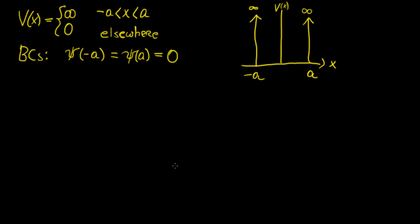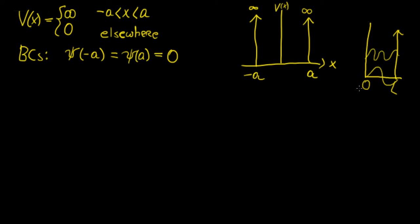In this problem we're going to solve a symmetric infinite square well. We already talked about the infinite square well for the case where we have a well going from zero to some length L, and we found an infinite set of eigenfunction solutions. Now we're going to investigate what happens when the square well goes from minus A to A — symmetric about the vertical axis.